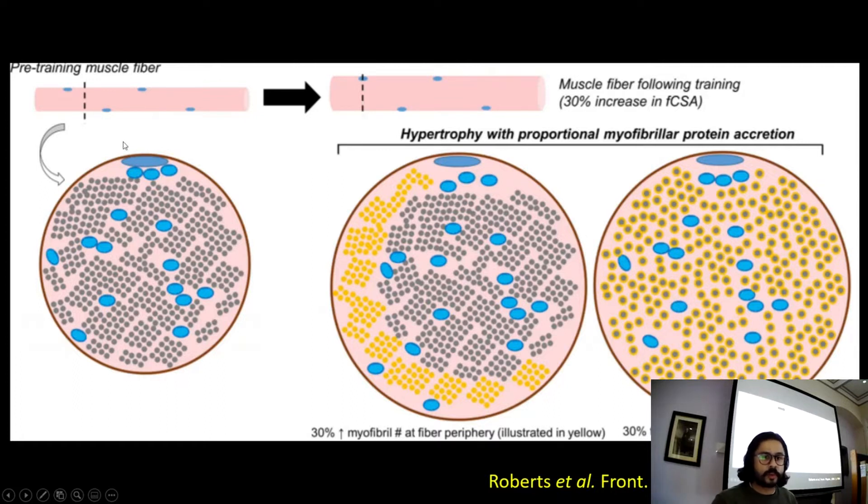Then you've got this light blue part. This is the myonucleus. And this is what will donate the genetic instructions for the cells to divide. And then we've got these blue circles which are the mitochondria. They provide the energy to the muscle.